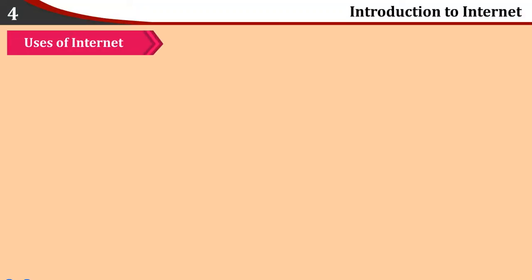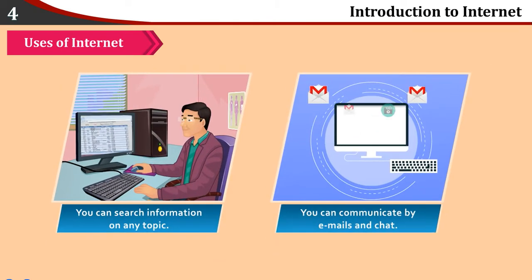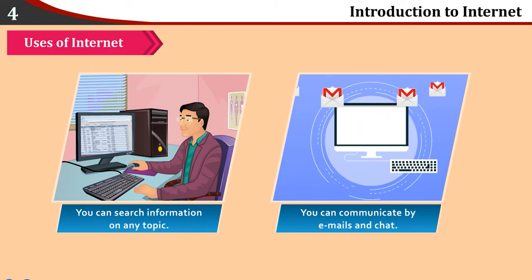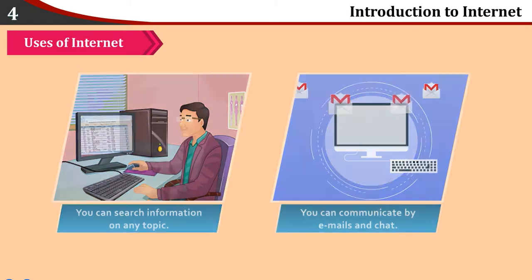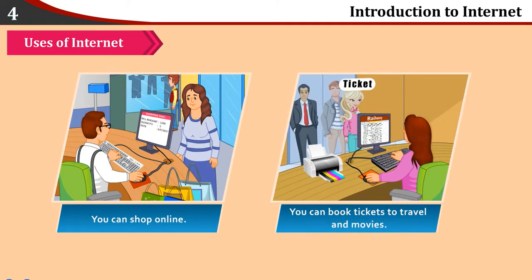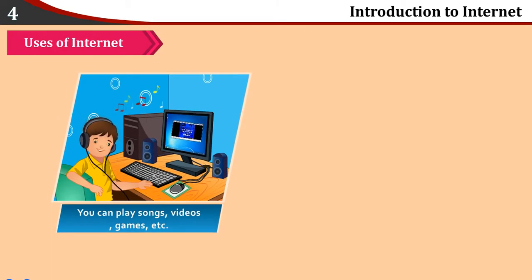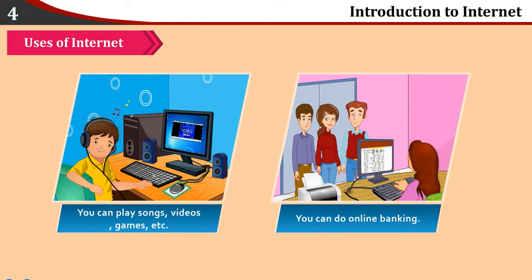Basic Terms of Internet — Users of Internet. You can search information on any topic. You can communicate by emails and chat. You can shop online. You can book tickets to travel and movies. You can play songs, videos, games, etc. You can do online banking.